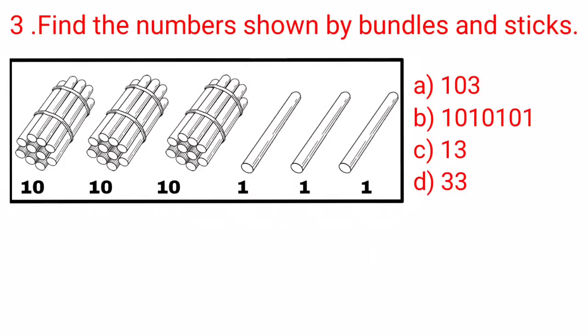Find the number shown by the bundles and the sticks. Here we have a picture of bundles and sticks. We will count the number of sticks firstly. Let's count the number of sticks given here: 1, 2 and 3. 3 sticks is equal to 3 ones.